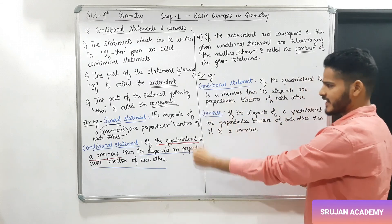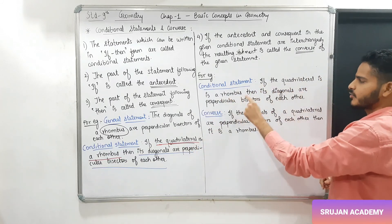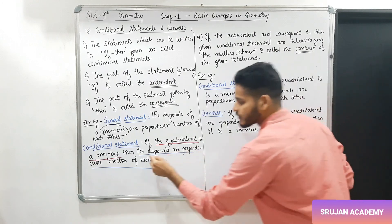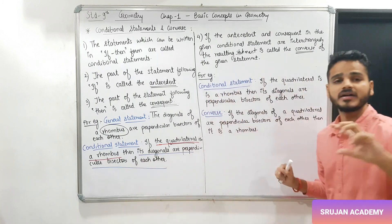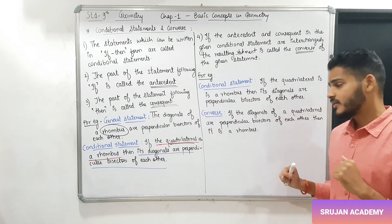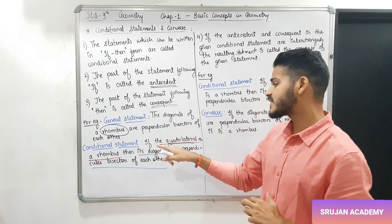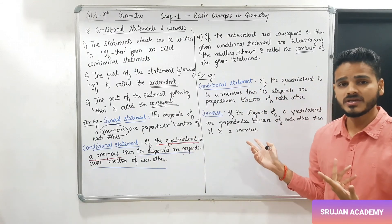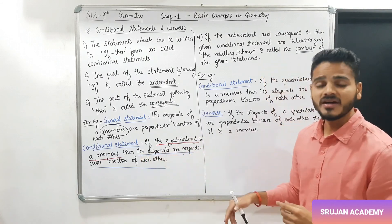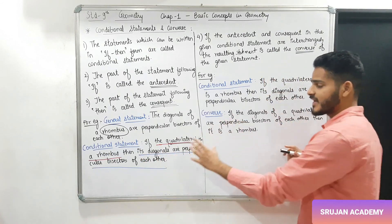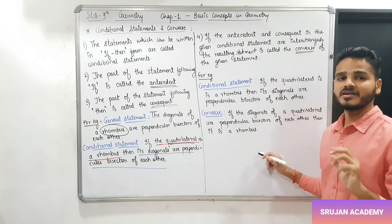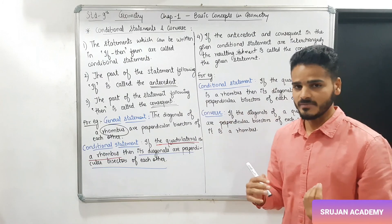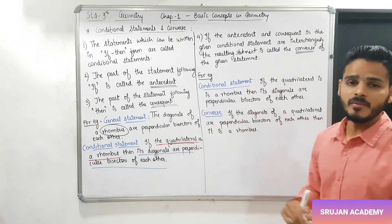यहाँ पर एक example है, same example यूज़ किया गया है. If the quadrilateral is a rhombus, then its diagonals are perpendicular bisectors of each other. इसको converse लिखना है. तो यह जो consequent part है, हम इसको antecedent बनाएंगे. Consequent में बोला गया है: its diagonals are perpendicular bisectors of each other. 'Its' मतलब rhombus की बात हो रही है. So rhombus belongs to the family of quadrilateral.